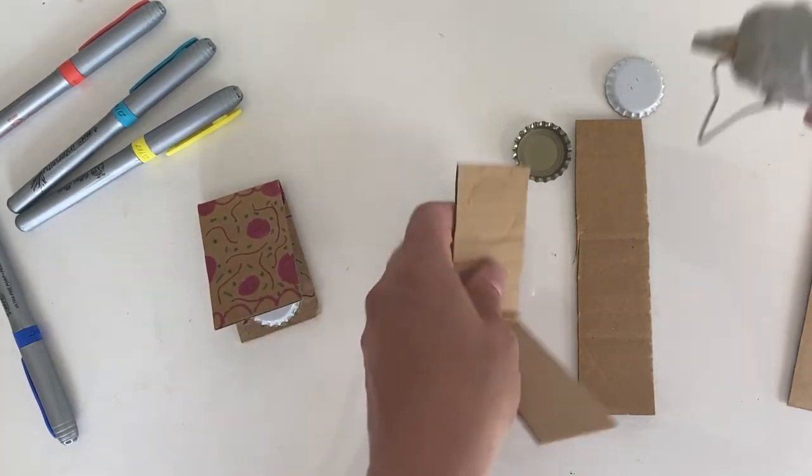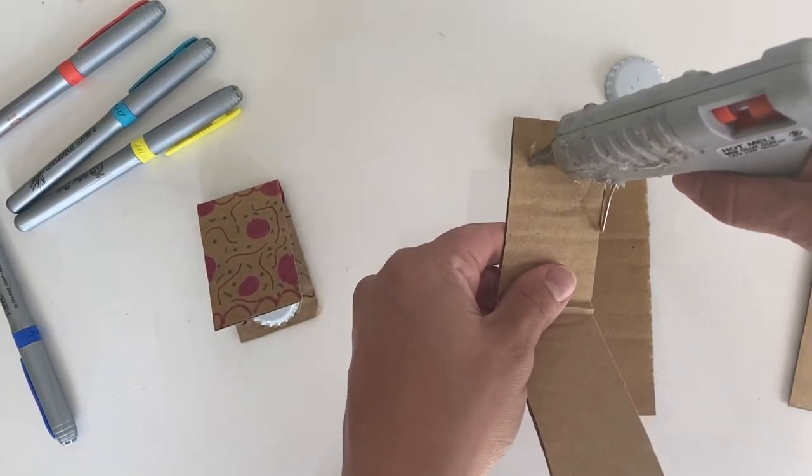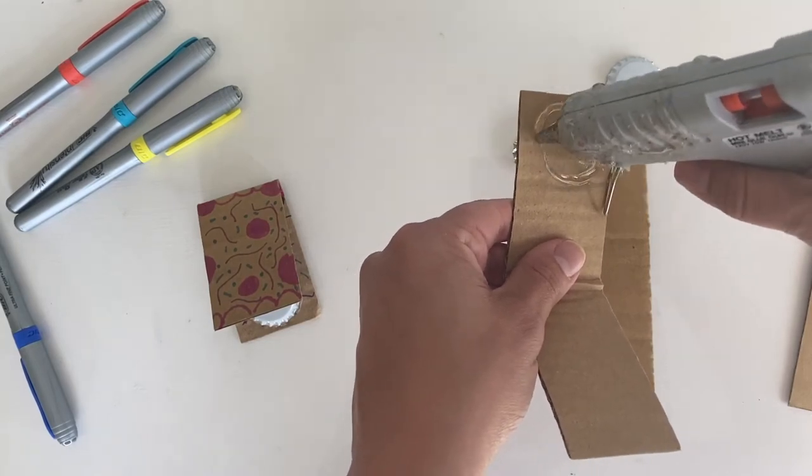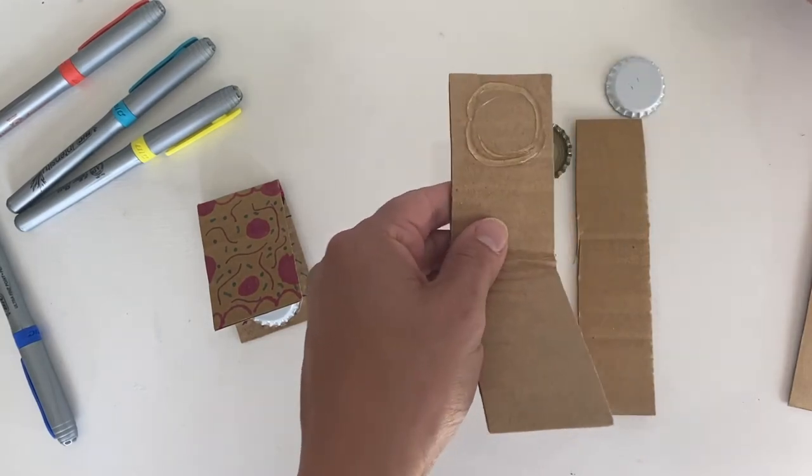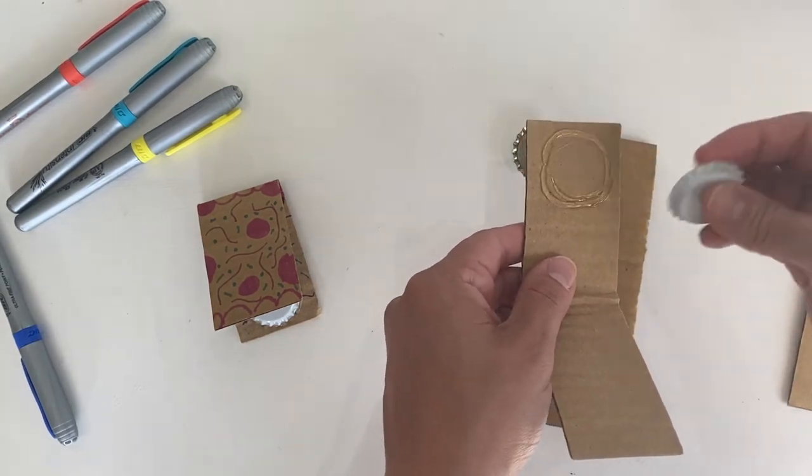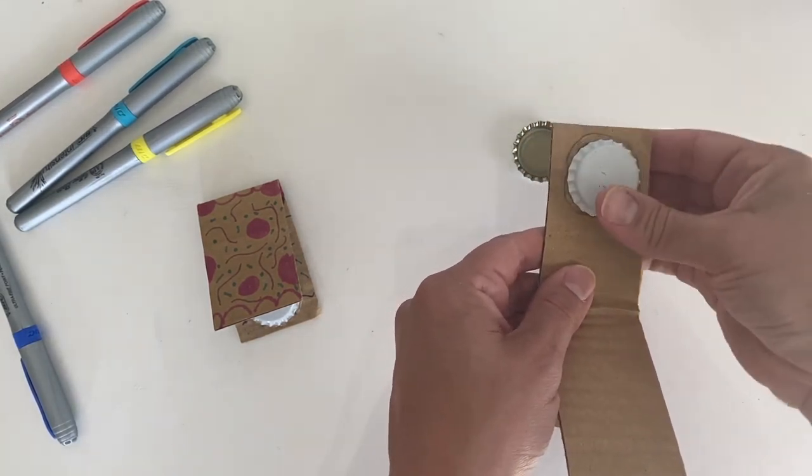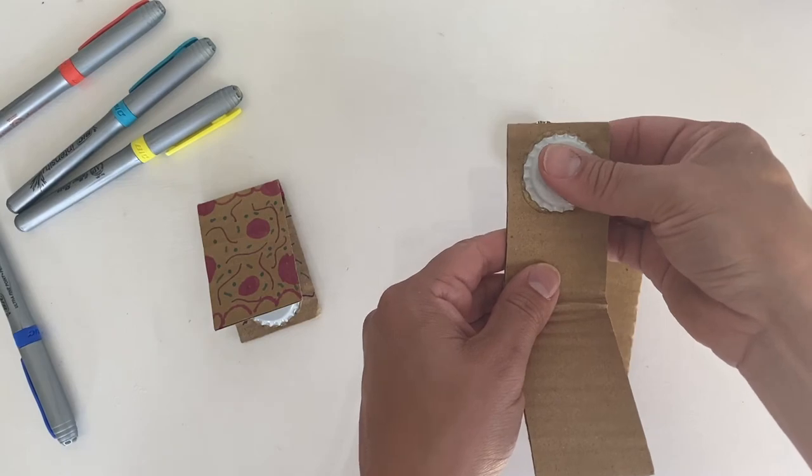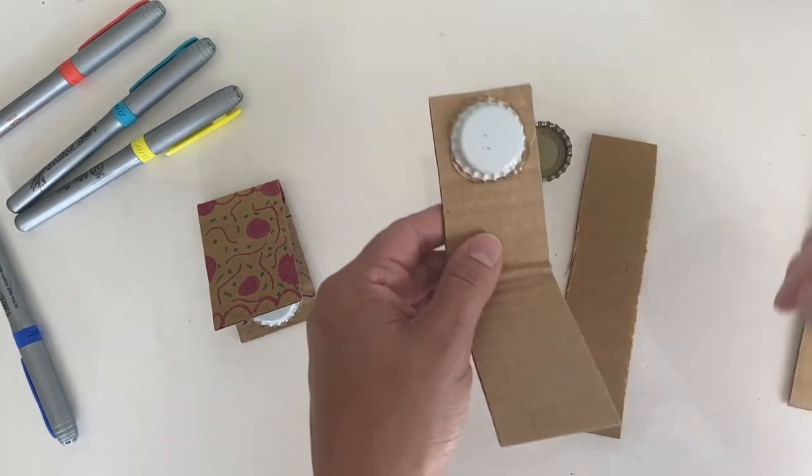Take your hot glue gun, go along the circle, and just lightly add a circle of hot glue to that area. Be careful not to burn your fingers. Lay your bottle cap down on it and one side is done.